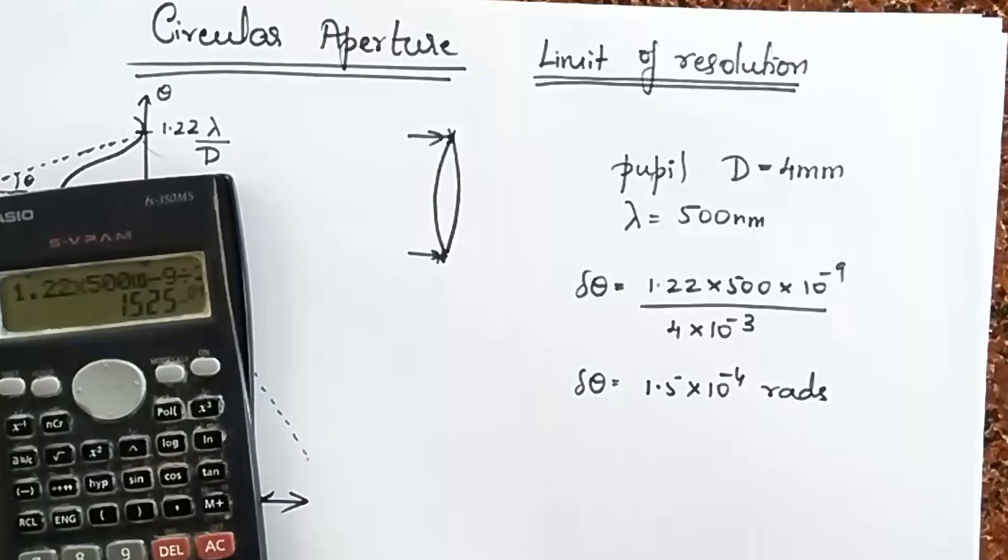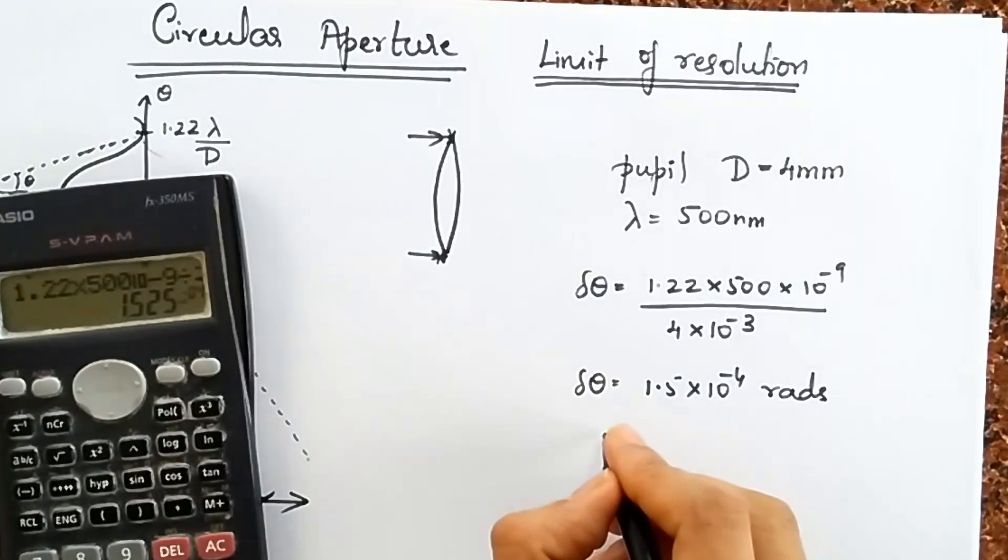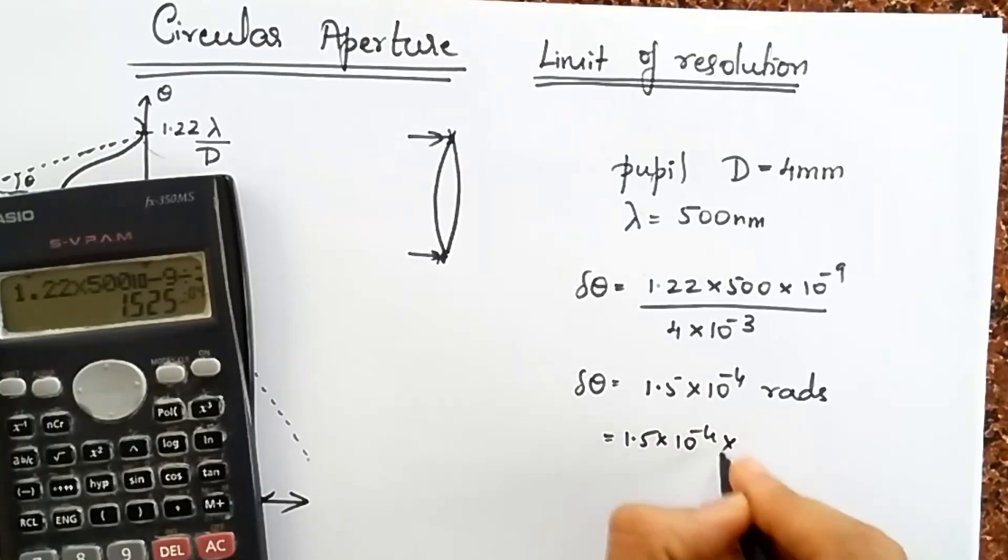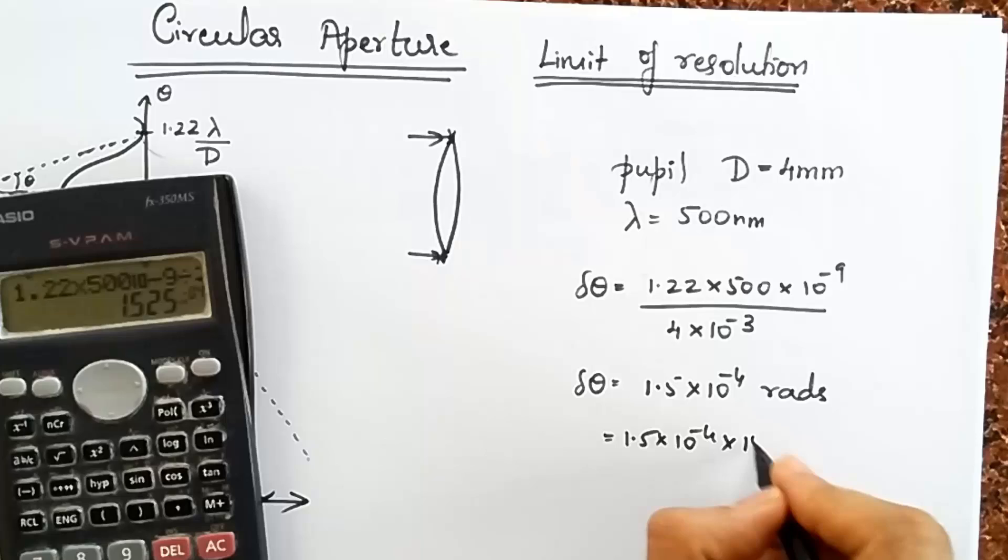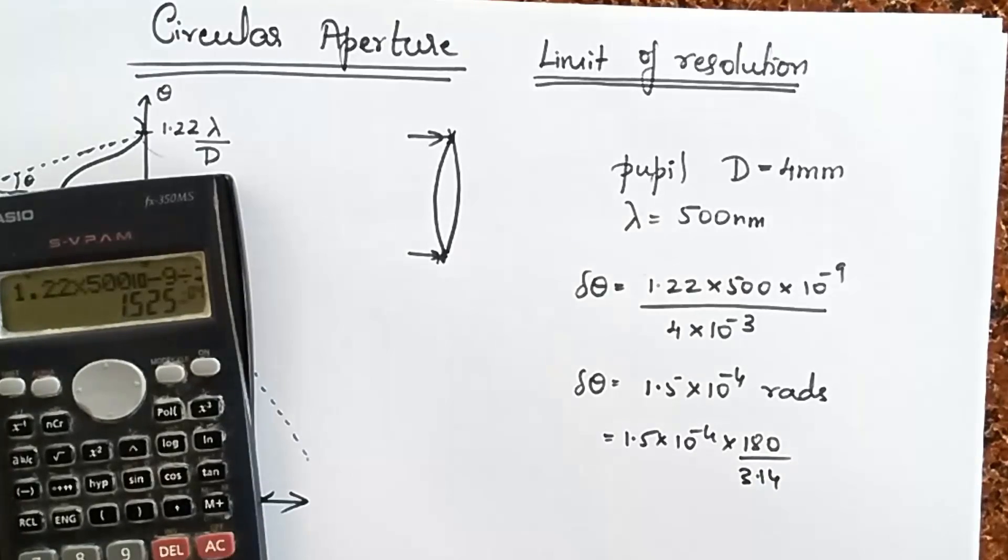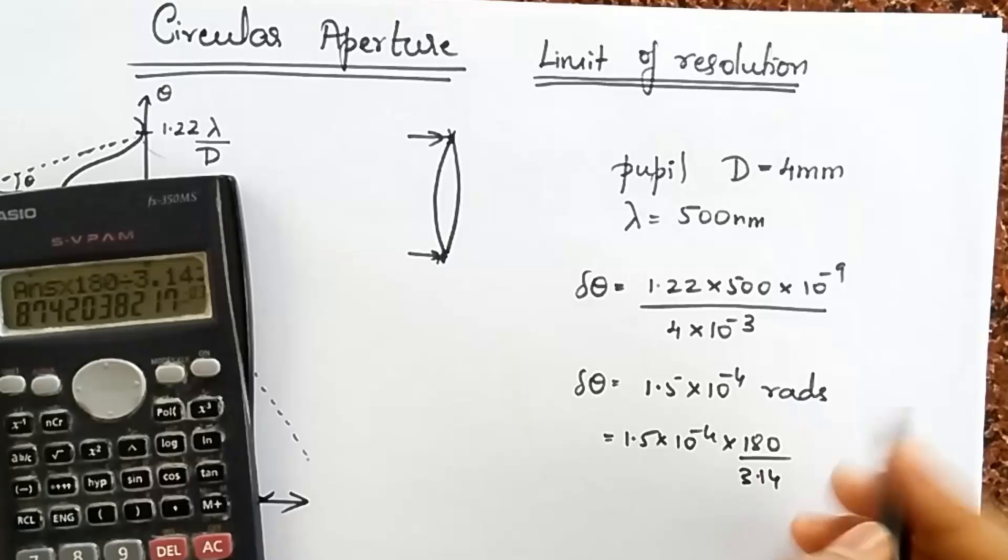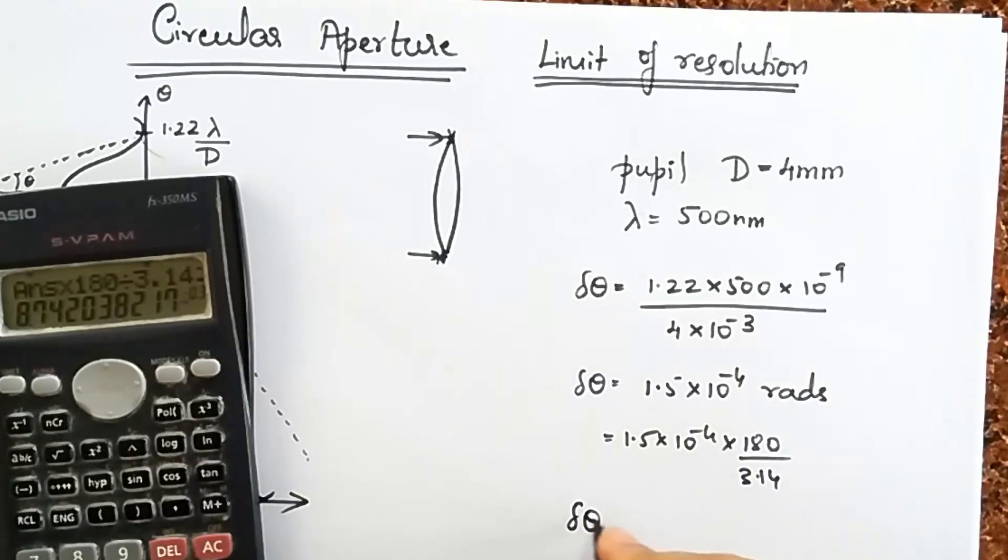Now we don't have feelings for radians so let's convert this into degrees. Radians to degrees is always 180 divided by 3.14 so 180 divided by 3.14 I get about 8.7 into 10 to the minus 3 degrees.